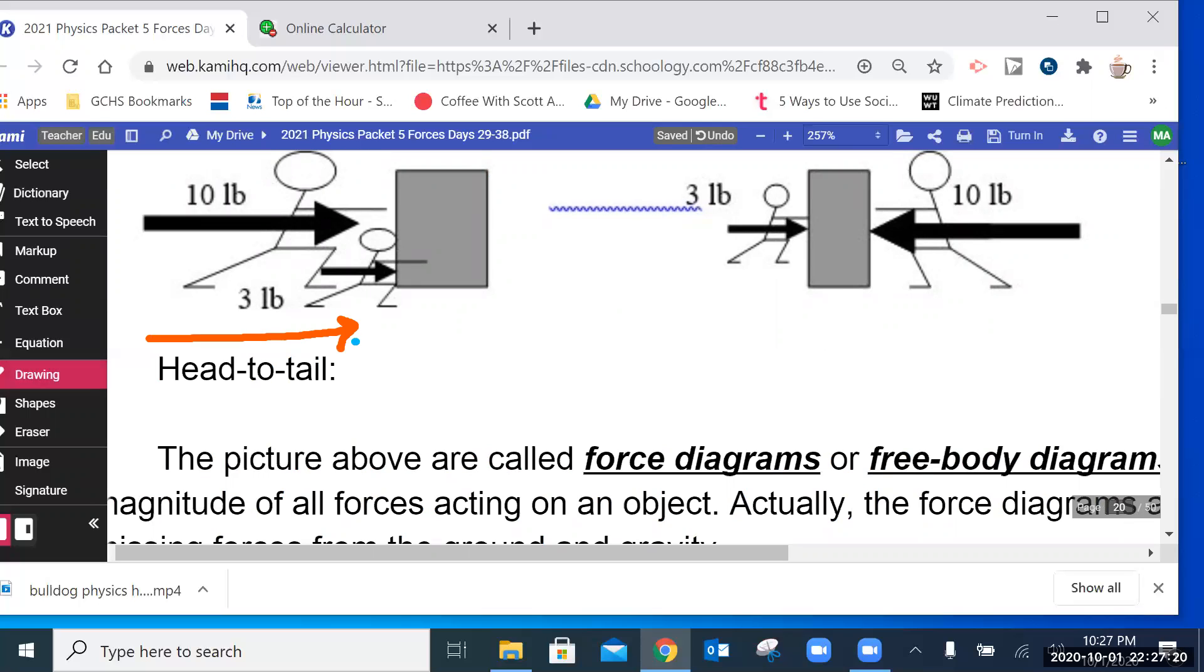We can add the three-pound arrow like this. We'll label them. And so the resultant vector, the net vector, you could also say the answer vector, is from the beginning of the first arrow to the tip or the head of the second arrow. And we can see that it's going to be 13 long.